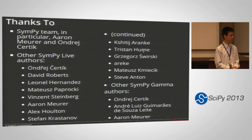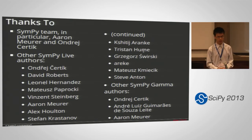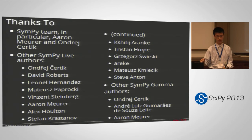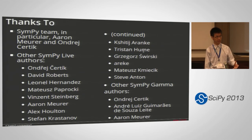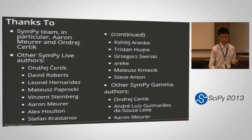Question from audience: What was the plotting backend? It uses SymPy to evaluate the function at a given number of points, and then sends the data to the browser. The browser renders it using JavaScript and SVG, but it's set up so that in the future we can use Canvas or WebGL for a 3D plot. The JavaScript library is D3.js.